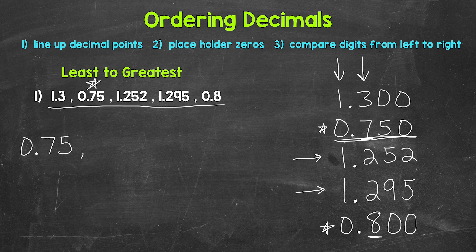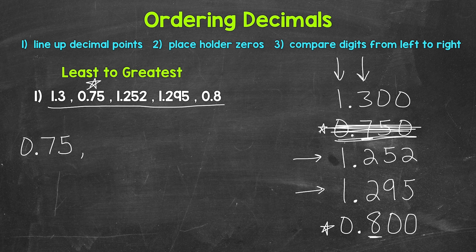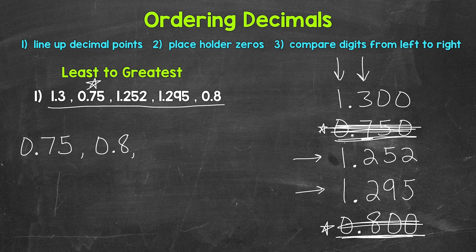Then we can put a comma and cross this off. I do want to mention another way to think about this — we can think in terms of the entire decimal part. We have seven hundred fifty thousandths compared to eight hundred thousandths, and seven hundred fifty thousandths is less than eight hundred thousandths. Now back to what we have remaining and we start the process over. Starting in the ones place, we have a one, a one, a one, and a zero. Zero is the smallest in value, so that comes next — that's going to be eight tenths. So let's write eight tenths and cross this off.